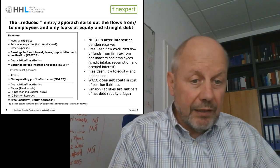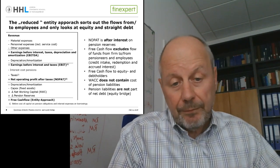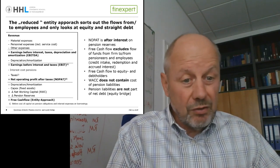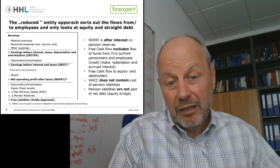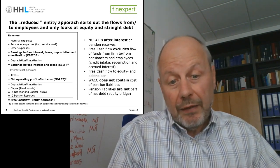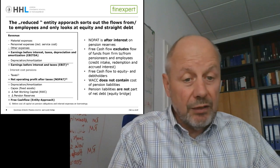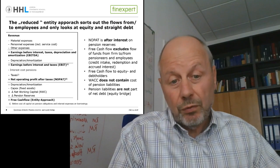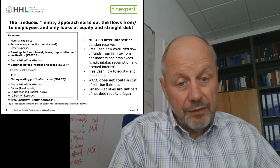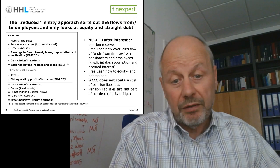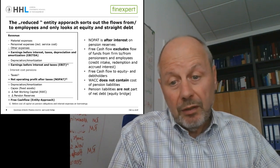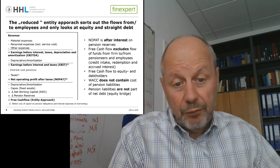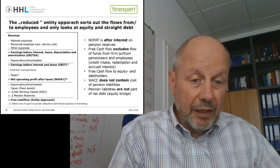This means the WACC contains only straight debt cost and cost of equity — pension liability costs are not part of the WACC anymore. The enterprise value in this case is the enterprise value of straight debt holders and equity holders only. Thus, pension liabilities are not part of the net debt anymore, because we adjusted for the flow of funds between the firm and the pensioners and employees.